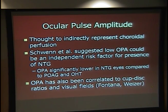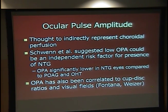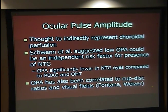A lot of studies have looked at OPA in glaucoma. Schwann suggested it could be an independent risk factor for the presence of normal tension glaucoma, especially when compared to primary open-angle glaucoma patients with elevated pressures and ocular hypertension. Additionally, OPA has actually been found to correlate with severity of disease as defined by cup-to-disc ratios and visual fields.